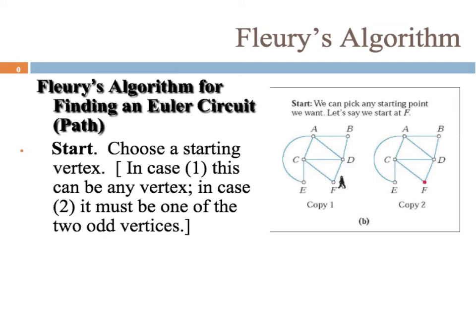So starting out, we can just choose any vertex. Now, if we had a graph that had two odd vertices on it, we'd have to actually start at one of the odd vertices so the path could be completed. But for this particular example, I think any of them are going to work. And in the example, it looks like we're starting at F. So I'm going to mark that down. So start at F.